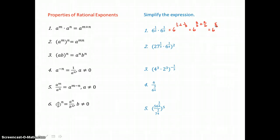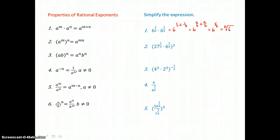Now we usually change those fractional or rational exponents to roots. So I'd write this as the sixth root of 5 factors of 6. And that doesn't simplify because there's not 6 factors alike underneath that radical. There would be 5 factors of 2 and 5 factors of 3.